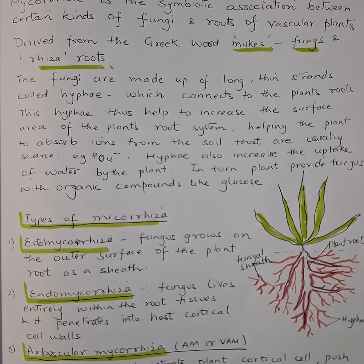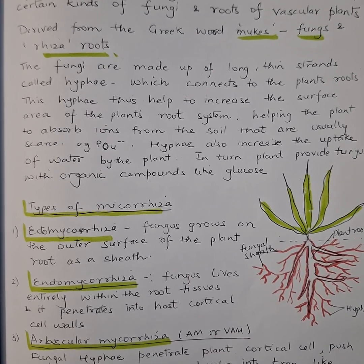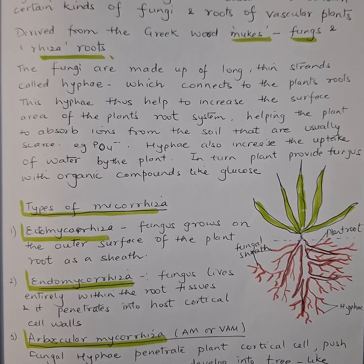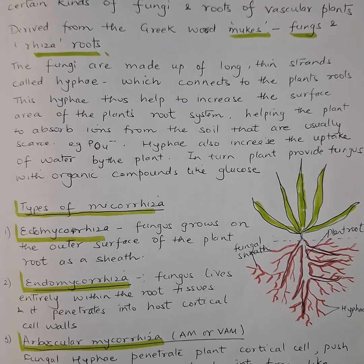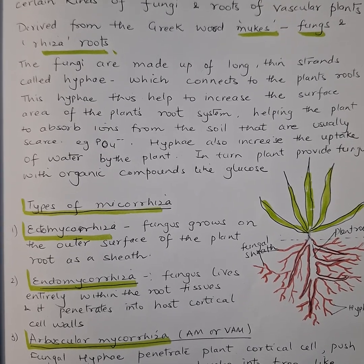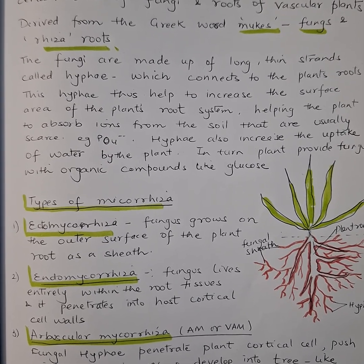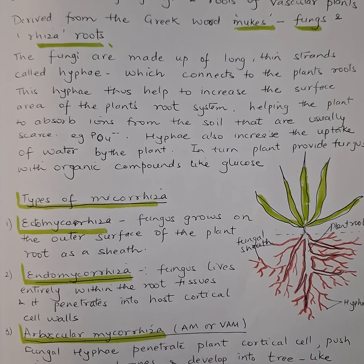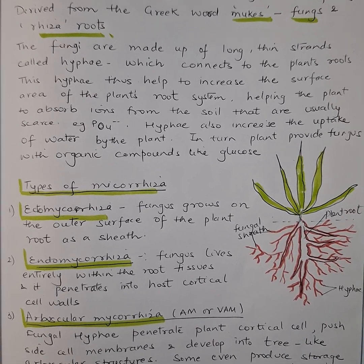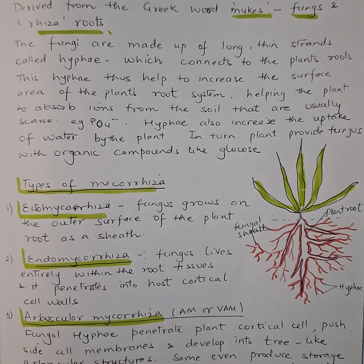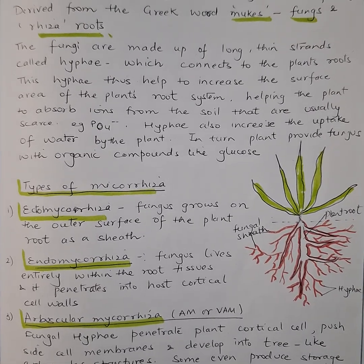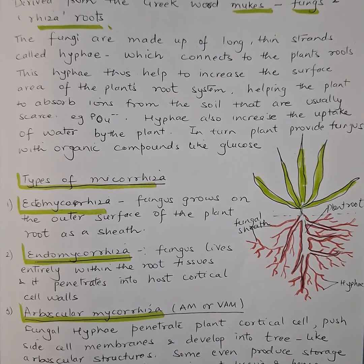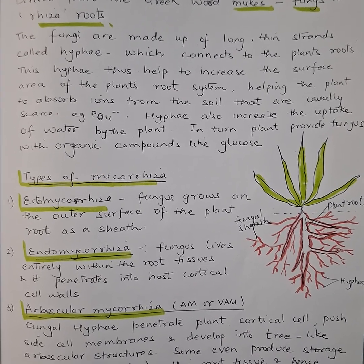Fungi are made up of long thin strands called hyphae. This hyphae connects to the plant roots and helps the plant by increasing the surface area of the root system. This allows the plant to absorb ions from the soil that are usually scarce, like phosphorus, and also helps increase the uptake of water.